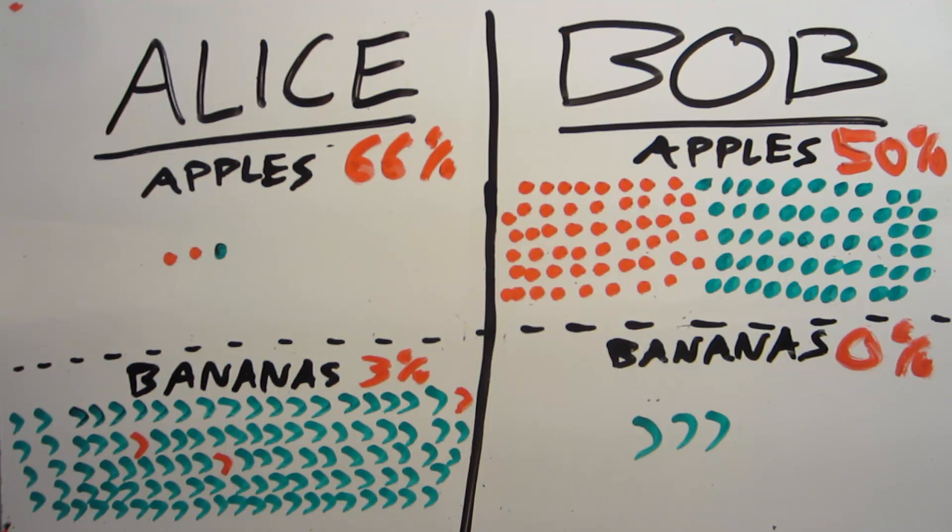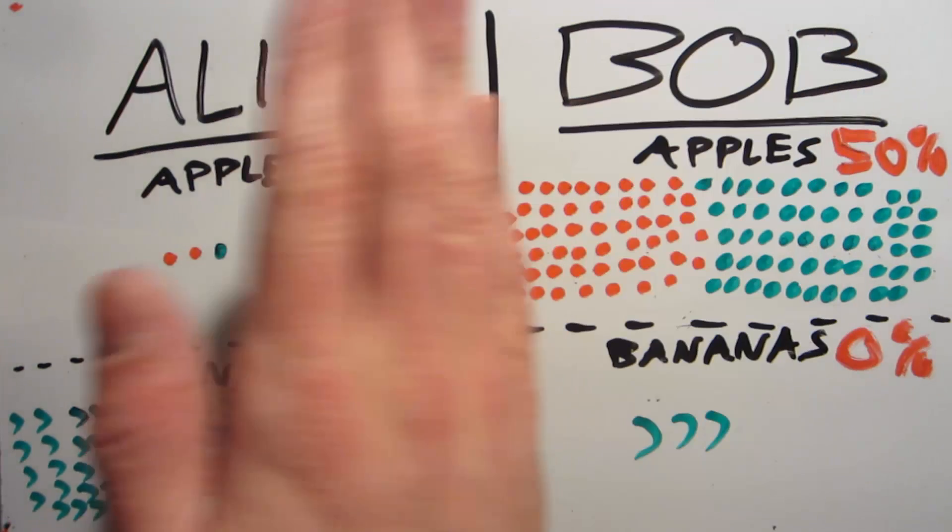If apples and bananas that they're getting actually came from the same provider, and the base rate of bad apples was actually 50, and the base rate of bad bananas was something like 5, you would still have different performances based on the amount of each type of fruit that they stock.